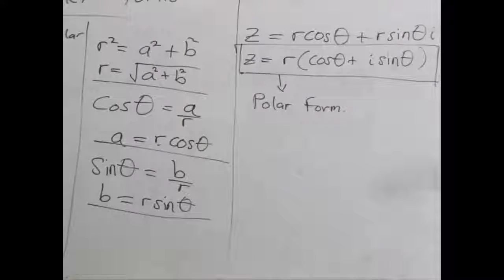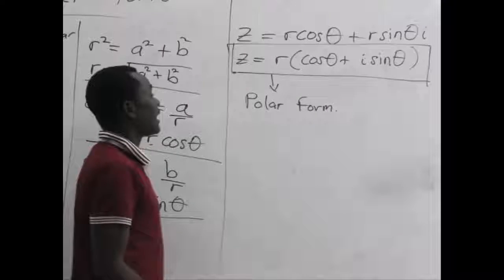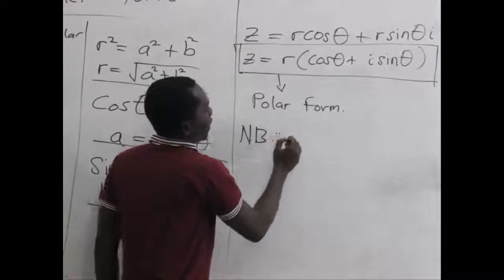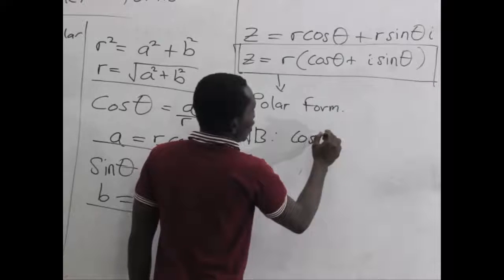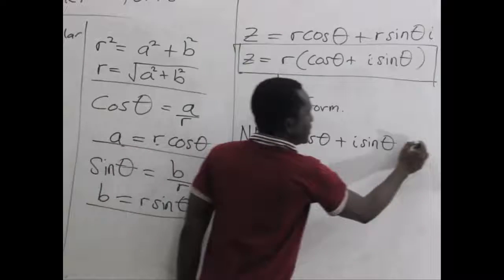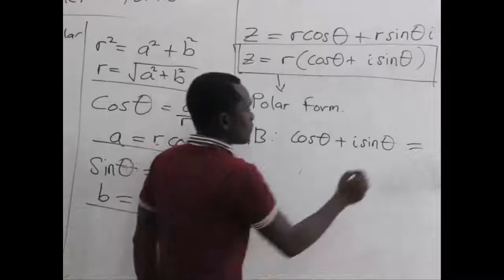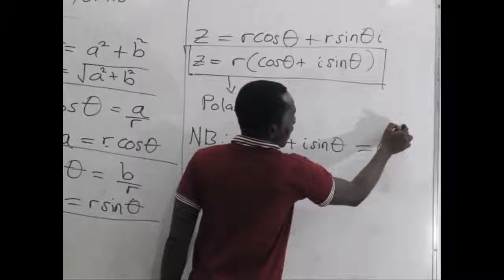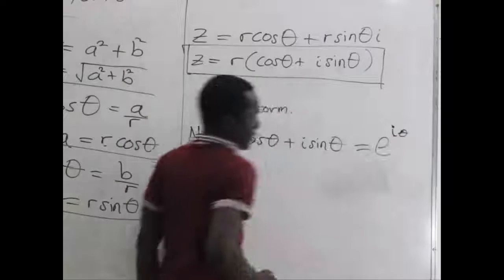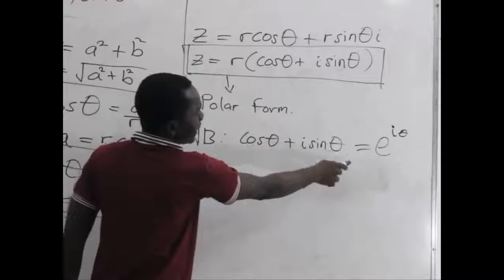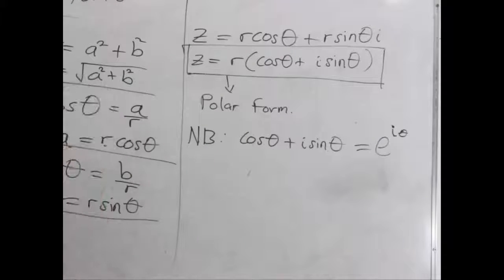Now, what about the Euler form? From mathematics and other computations, we can note that any time we have cos theta plus i sine theta, this is also equal or equivalent to the natural e raised to the power i theta. So anywhere we see cos theta plus i sine theta, we can replace that with the natural e raised to the power i theta.